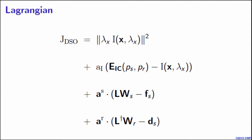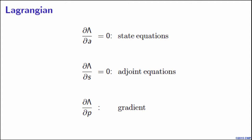How to get the gradient from here? Lagrangian formulation has the following properties. If we take the derivative of the Lagrangian with respect to the adjoint state variable and set it equal to zero, we get back our state equations, which are our physical constraints. Likewise, if we take the derivative with respect to the state variables and set them equal to zero, we obtain the adjoint equations and adjoint sources. Finally, the derivative with respect to the parameter of interest yields the gradient of the objective function.